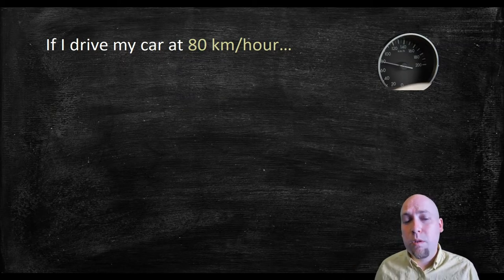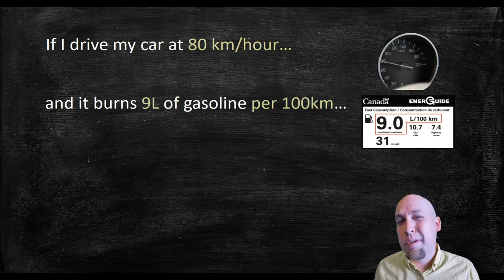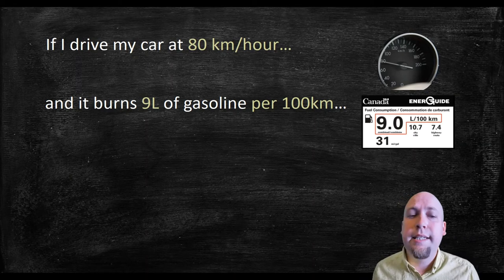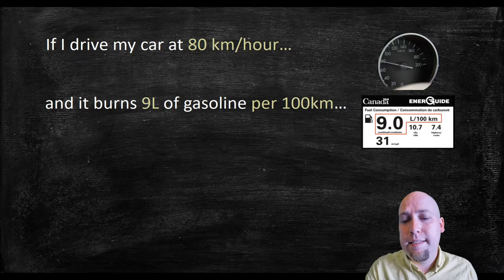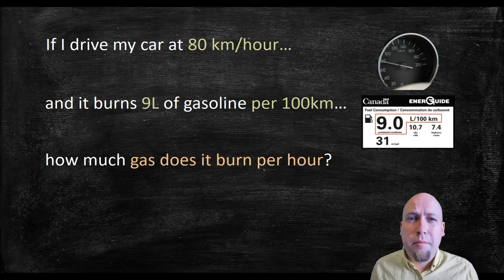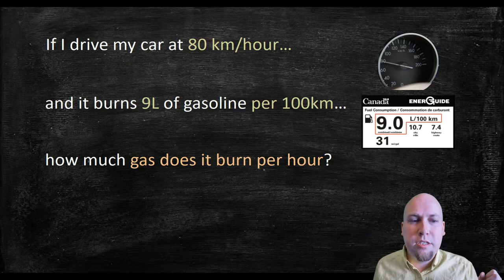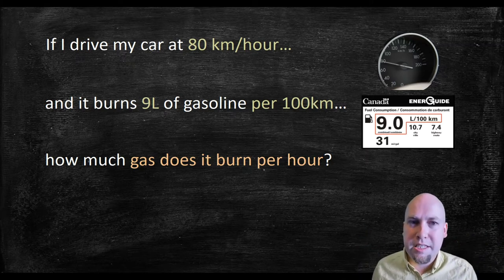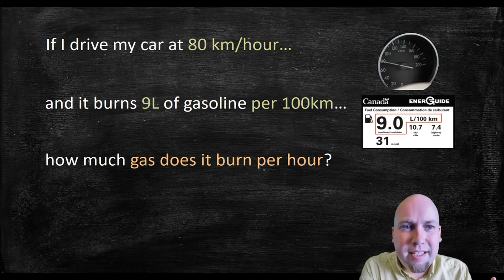Let's imagine that we're driving down the road at 80 kilometers an hour, and we know that our car burns roughly nine liters of gasoline per 100 kilometers that you drive. Then the question we're going to ask is: how much gas does our car burn per hour if we take these two rates of change into account — how much gas do we burn per hour if we're driving at this speed?